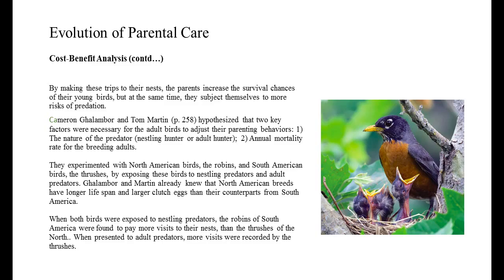Cameron Gallenberg and Tom Martin hypothesized that two key factors were necessary for adult birds to adjust their parenting behaviors: one, the nature of the predator, and two, the annual mortality rate for the breeding adults. They experimented with North American birds, the robins, and South American birds, the thrushes, by exposing these birds to nestling predators and adult predators.